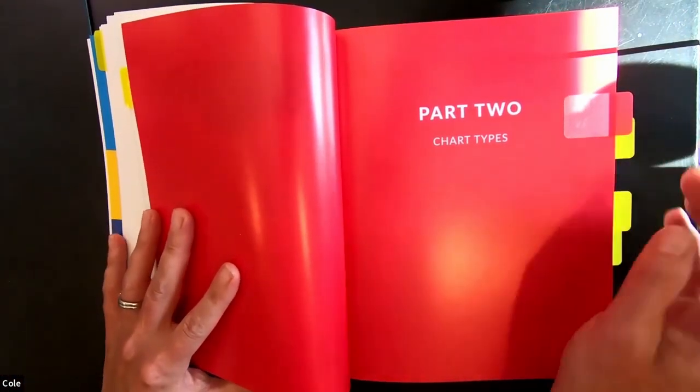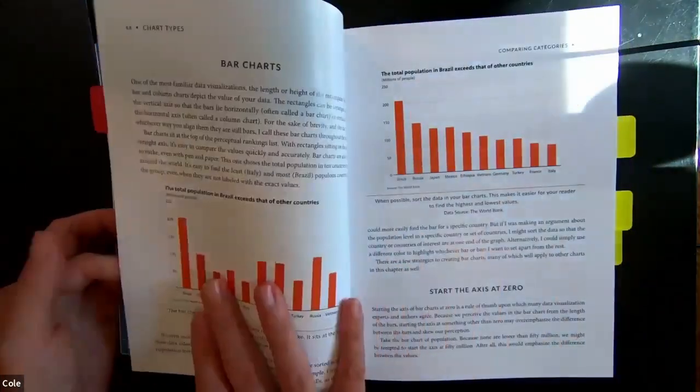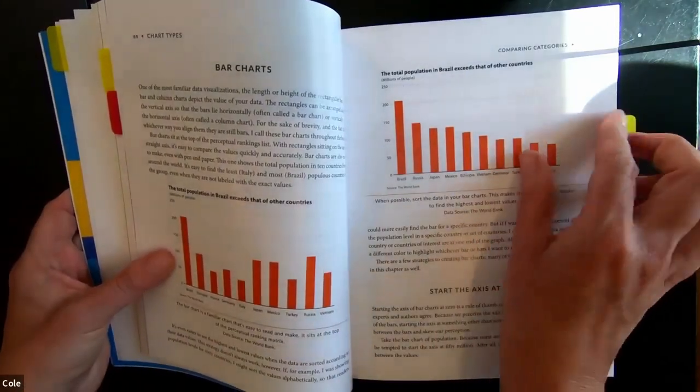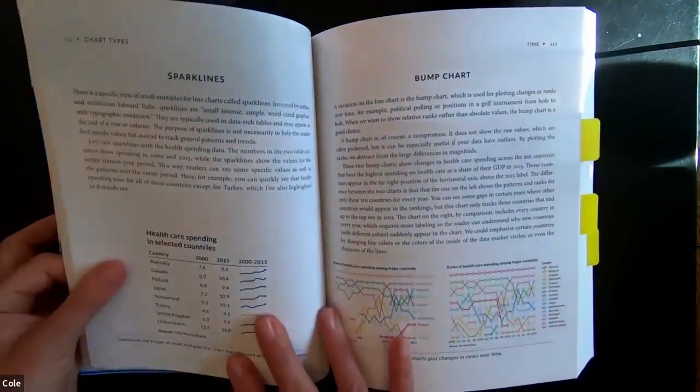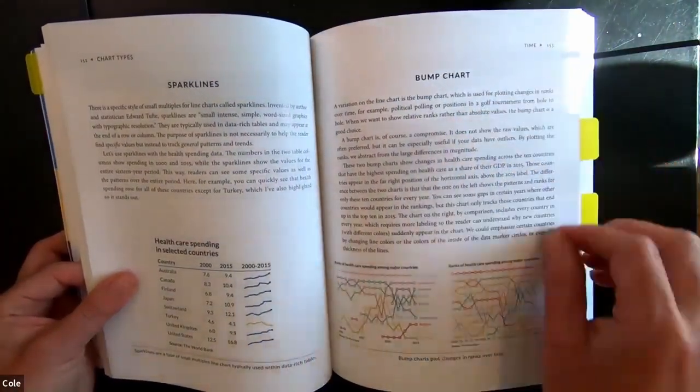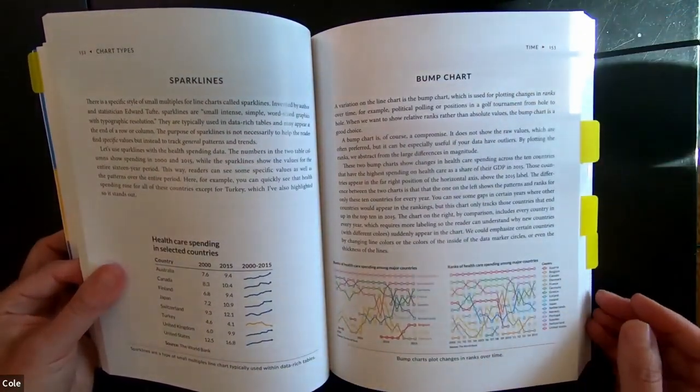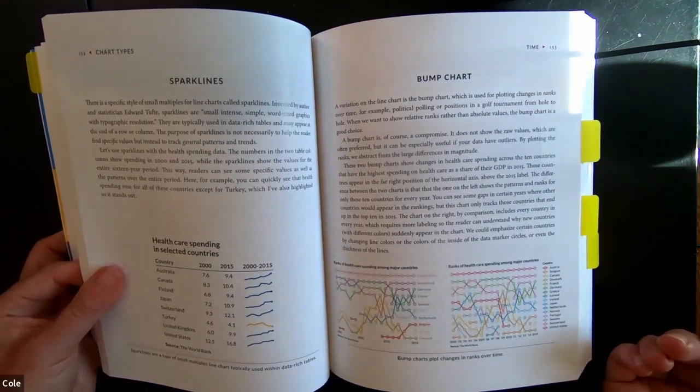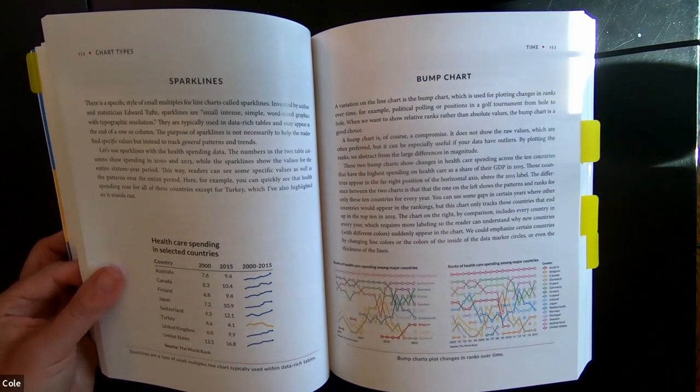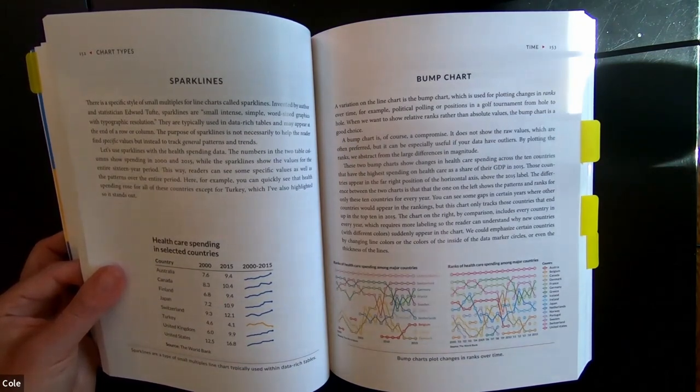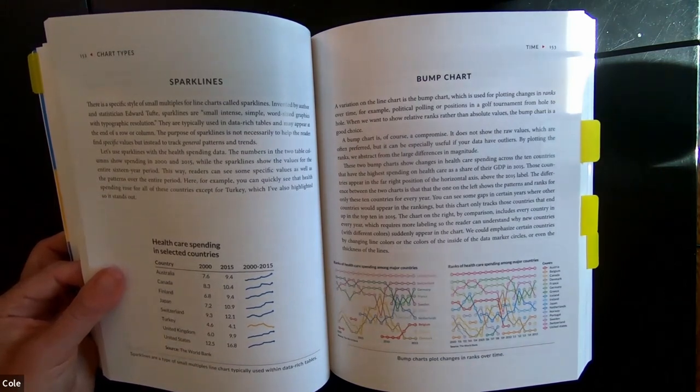Let's see, it's a snapshot here. Part two is, like I said, the meat of the book. We start with some of the basics - bar charts for comparing categories, but it gets quickly more nuanced from there. I'm just going to highlight a couple of these. I've jumped now into the time subsection to the bump chart. A variation on the line chart is the bump chart, which is used for plotting changes in ranks over time. For example, political polling or positions in a golf tournament from hole to hole. When we want to show relative ranks rather than the absolute values, the bump chart is a good choice.